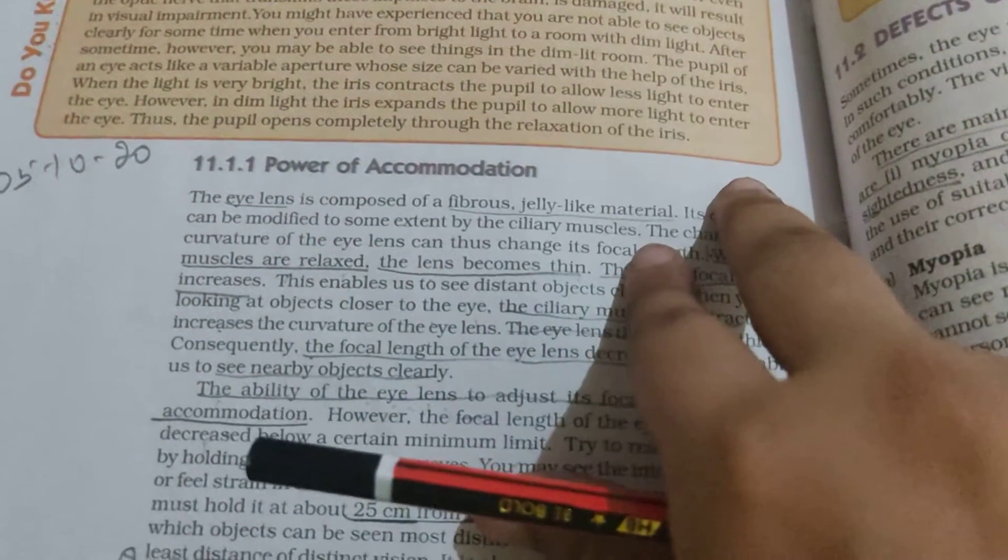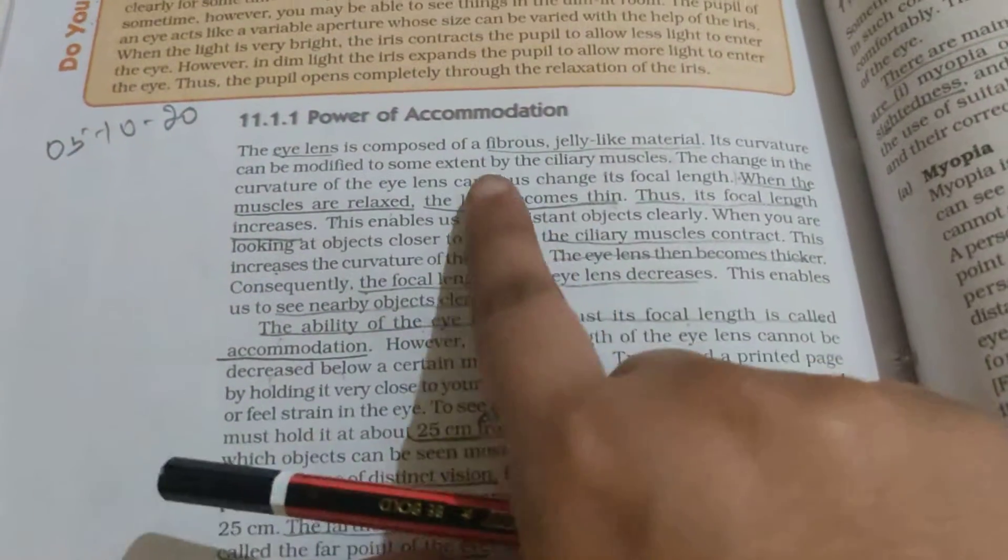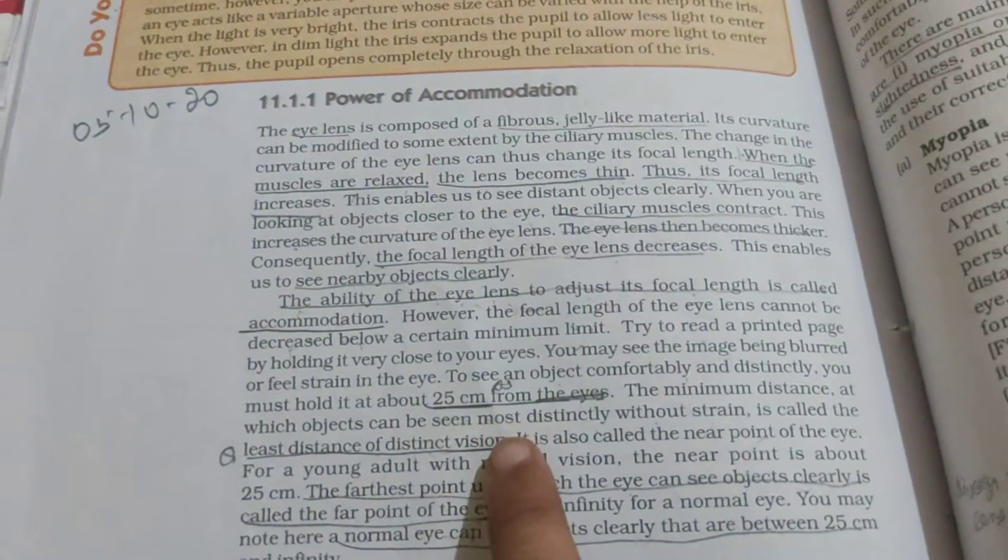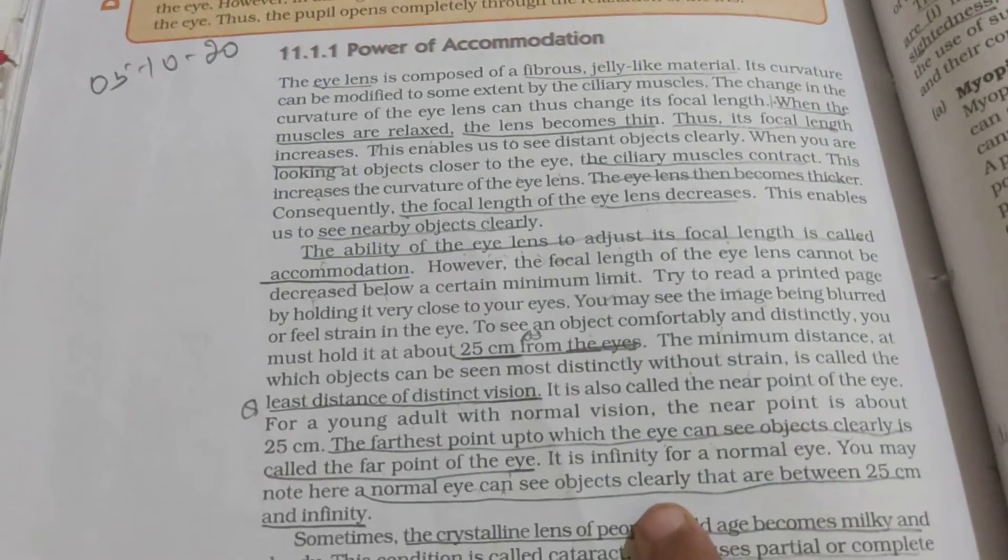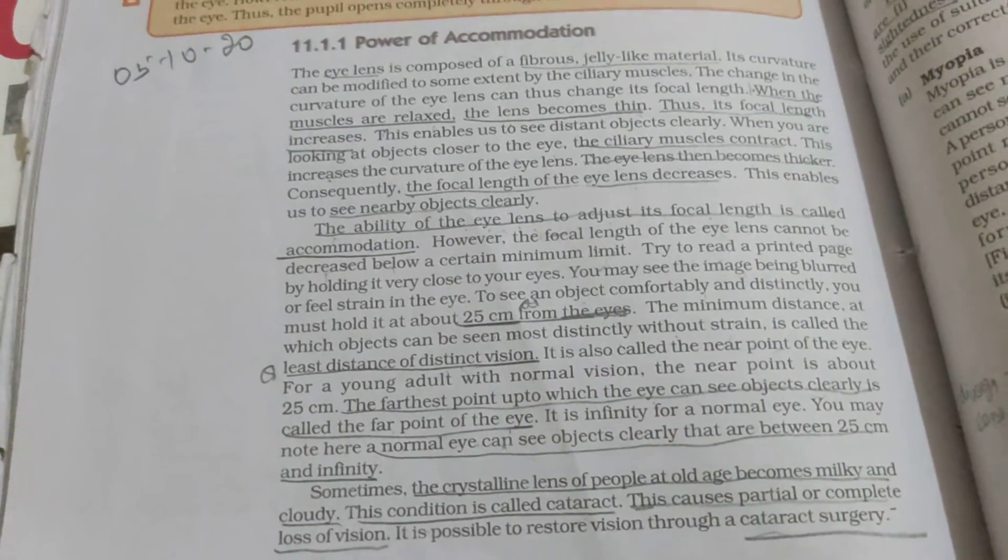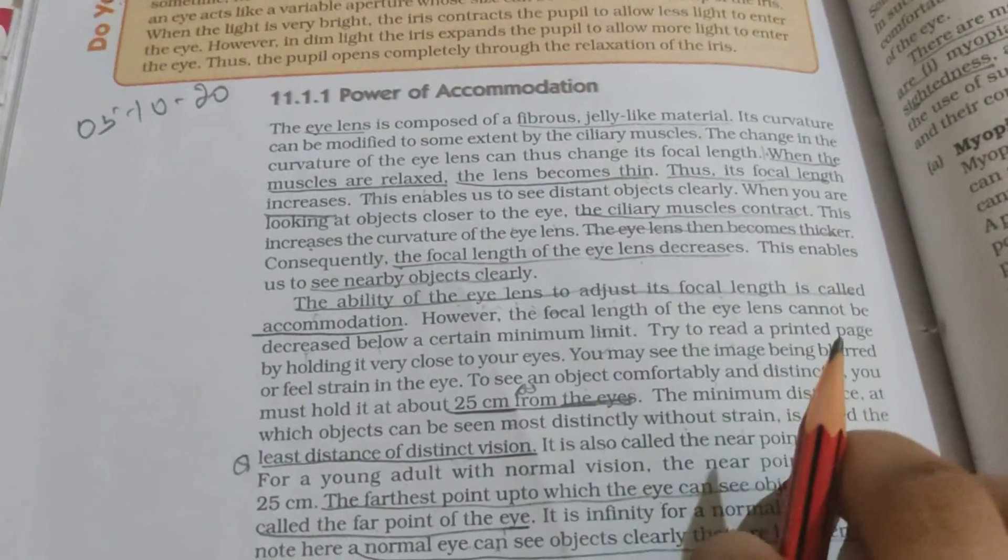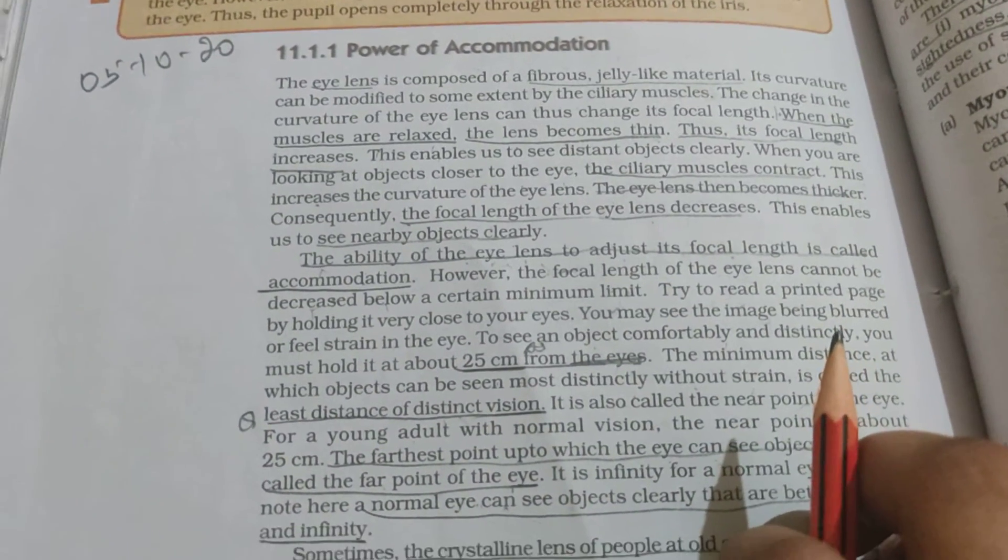So this is about power of accommodation. We discussed what is far point, near point, and what is cataract. You can read this page, and whatever questions you have on the page, you can copy it.